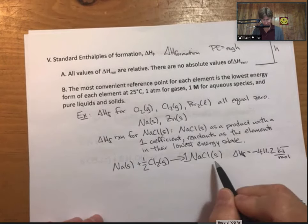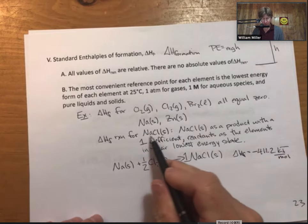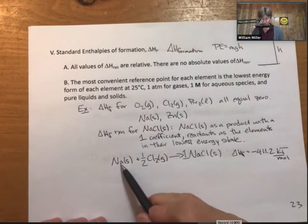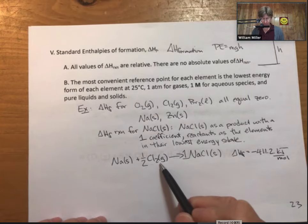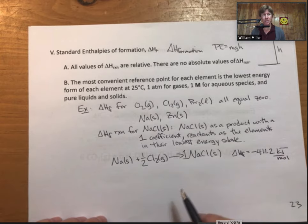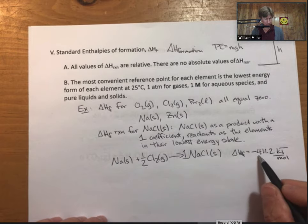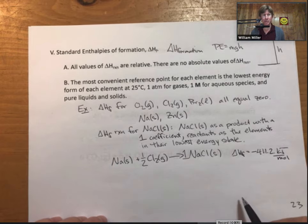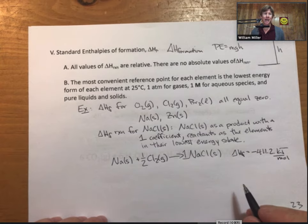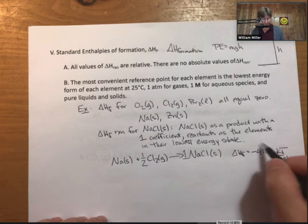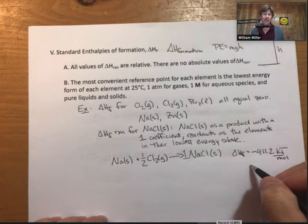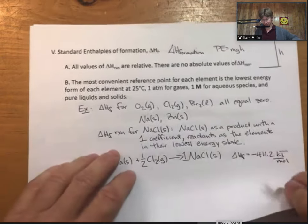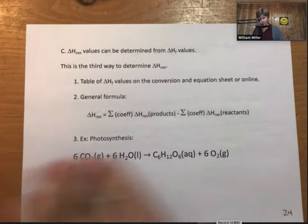And the units of all those on that table are kilojoules per mole. What this reaction says, and this is a delta HF reaction for sodium chloride, is that if we started with sodium solid and half a mole of chlorine gas, and made sodium chloride out of them, that process, that reaction would release 411.2 kilojoules per mole. And what the power of delta HF reactions is, is we'll tabulate all these values and then use them to calculate delta H reaction.